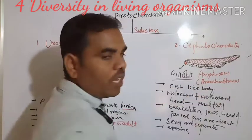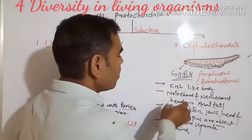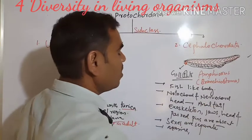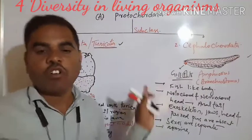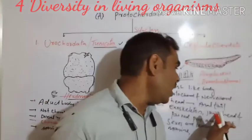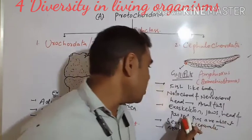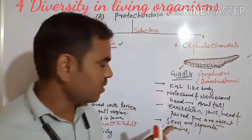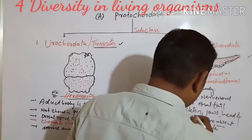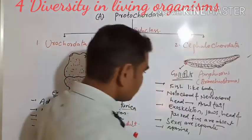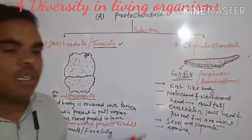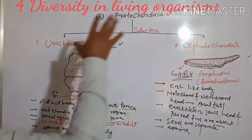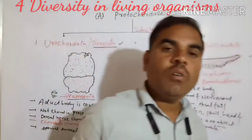To summarize Cephalochordata: fish-like body, notochord and nerve cord present up to the anal tail, exoskeleton, jaws, head, and paired appendages are absent. Fins are present. Sexes are separate. Mostly marine animals. This concludes Urochordata and Cephalochordata. Next, we move to Vertebrata.